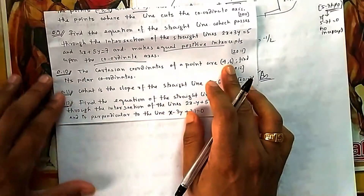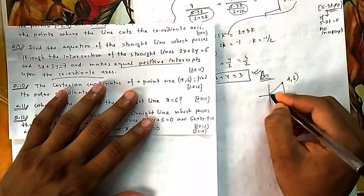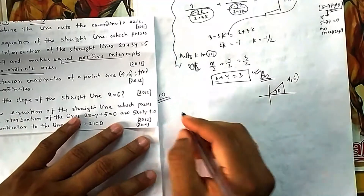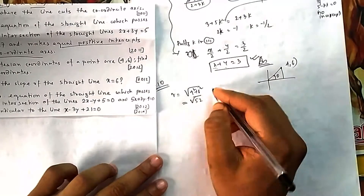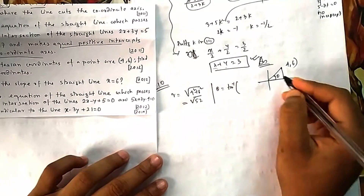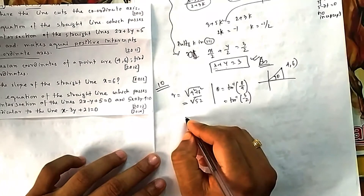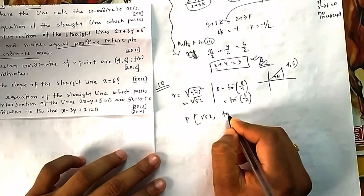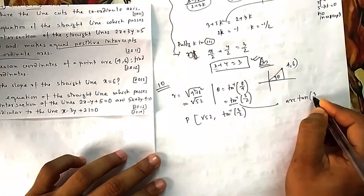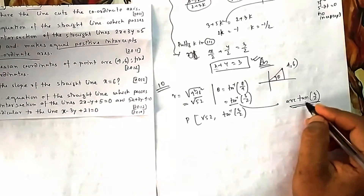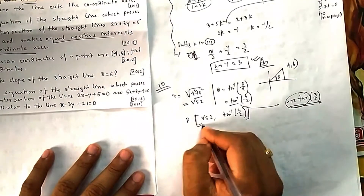Question 10: Convert the Cartesian coordinate (4, 6) to polar form. The point (4, 6) is in the first quadrant. The radial distance r equals the square root of 4 squared plus 6 squared, which is root 52. The angle theta equals tan inverse (6/4), which simplifies to tan inverse (3/2). So the polar coordinate is (root 52, tan inverse 3/2). Note: arc tan and tan inverse mean the same thing.